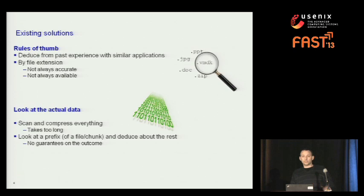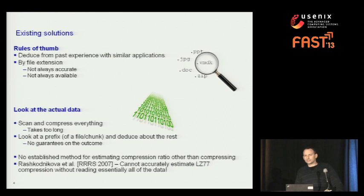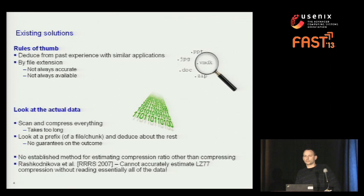Can you read some other part of the data that gives a good clue? Today there's no established method for estimating compression ratios other than just compressing. Moreover, a paper by Rashkodnikova et al. from 2007 in the realm of property testing proved analytically that you cannot accurately estimate LZ77 compression unless you read practically all of the data — which takes a lot of options off the table.